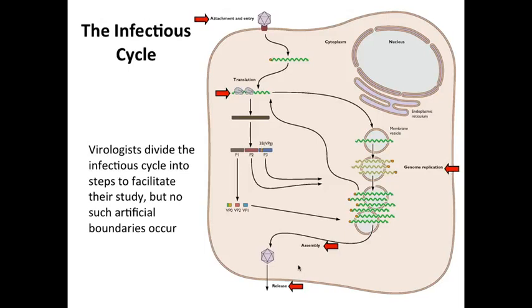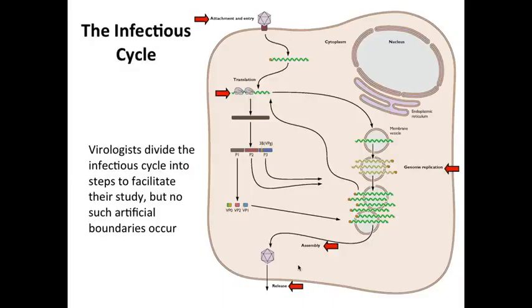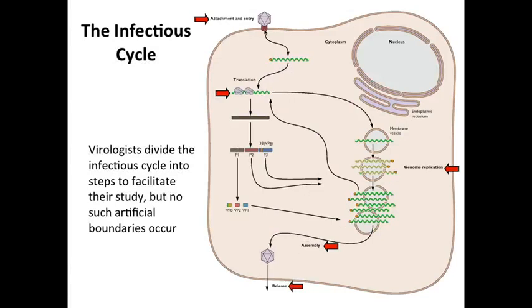For example, the first step of the infectious cycle — attachment to a host cell receptor — would be different for poliovirus and other members of the picornavirus family like rhinovirus, foot and mouth disease virus, and so on. We divide the cycle into steps only to make it easier to study, because in an infected cell everything happens in a continuum. These steps are illustrated here by red arrows: attachment and entry. The next step shown here is translation. This happens next in a cell infected with poliovirus because the RNA released from the capsid is in fact the messenger RNA, so it can be directly translated. But other viruses have DNA genomes, and DNA cannot be translated — you have to first make messenger RNA. So you can see how the infectious cycle can differ just depending on the configuration of the nucleic acid in the virion.